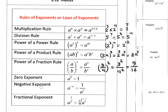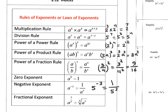Negative exponent rule: if you have a negative power, such as a^(−x), the rule is a^(−x) equals 1 over a^x. For example, 5^(−3) is the same as 1 over 5^3, which is 1 over 5 times 5 times 5, which is 1 over 125. So in general, a^(−x) equals 1 over a^x.